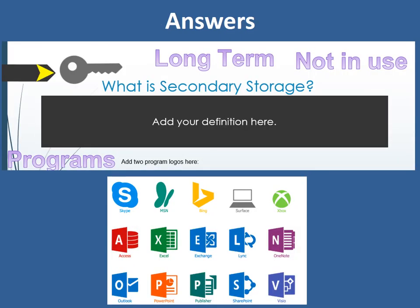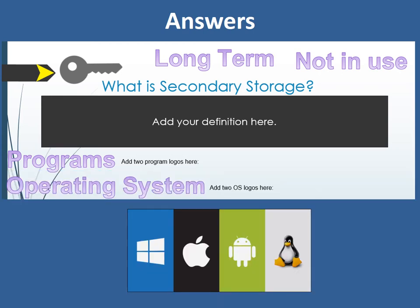Programs — these are the applications or software that actually run on your computer. Operating systems: there are lots of different types of operating systems — Windows, you might have iOS for Apple, Android, Linux. There are lots of these. These are the programs that actually run the computer systems.